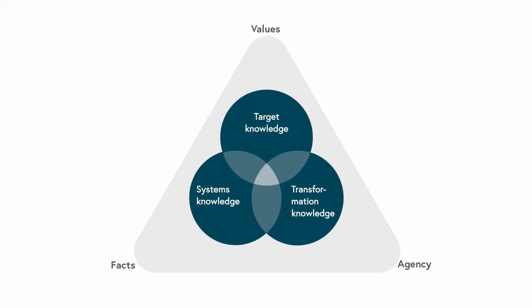To operationalize the concept, we define core questions for each knowledge type. Systems knowledge answers the question: what is? Target knowledge addresses the question: what ought to be? And finally, transformation knowledge defines the how to.